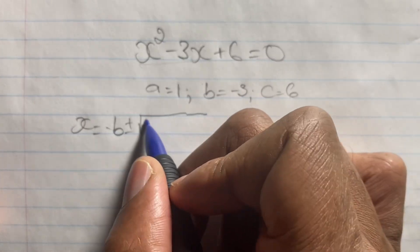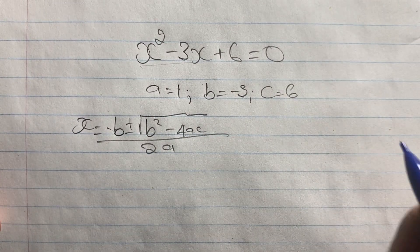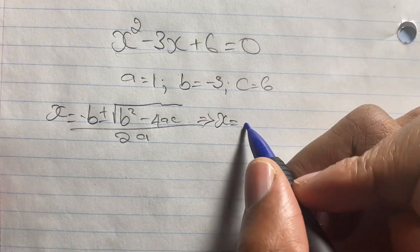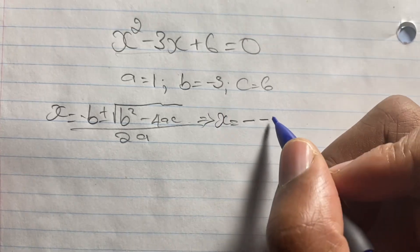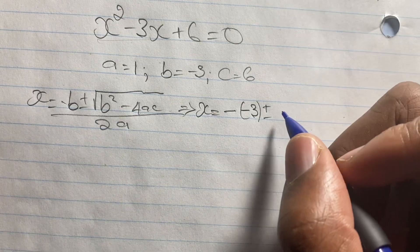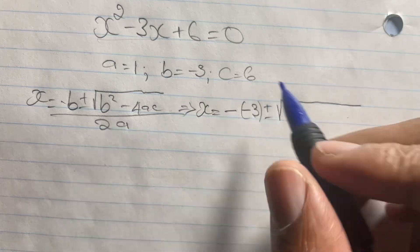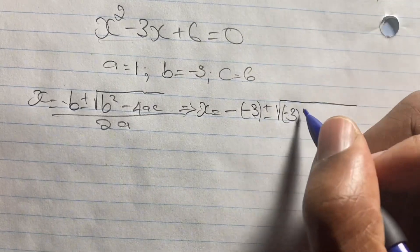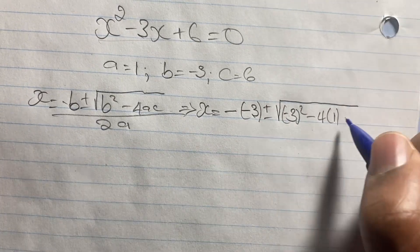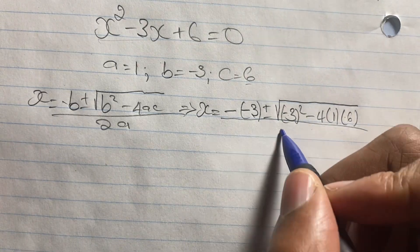We solve using the quadratic formula: x equals negative b plus or minus the square root of b squared minus 4ac, all over 2a. Plugging in our values: x equals negative of negative 3, plus or minus the square root of negative 3 squared minus 4 times 1 times 6, all over 2 times 1.